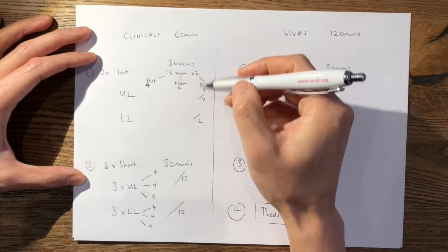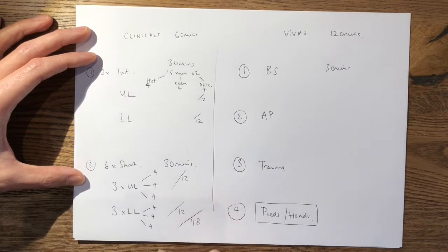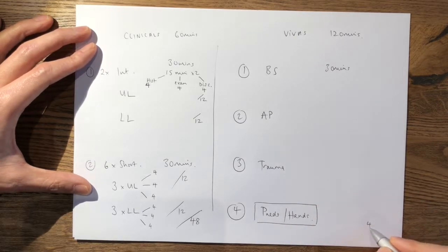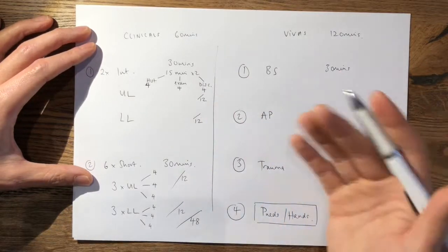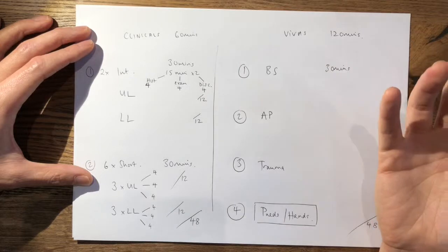So in total, your scoring opportunities in your clinicals are out of 48, and you have similarly 48 scoring opportunities in all of your vivas. However, they don't use the same domains because obviously you're not marked for bedside manner for your vivas.